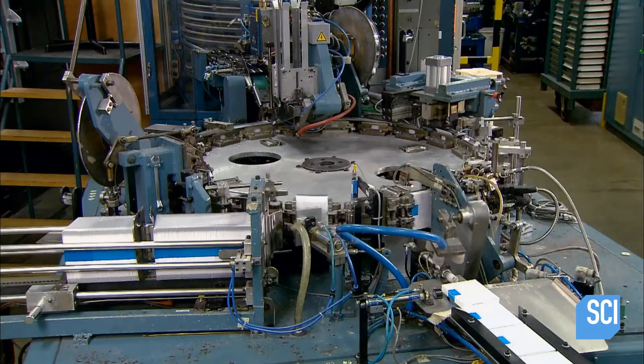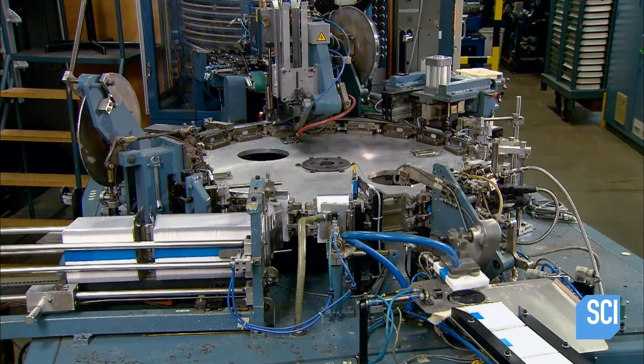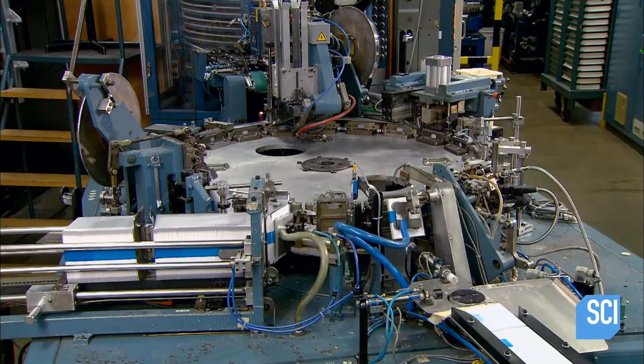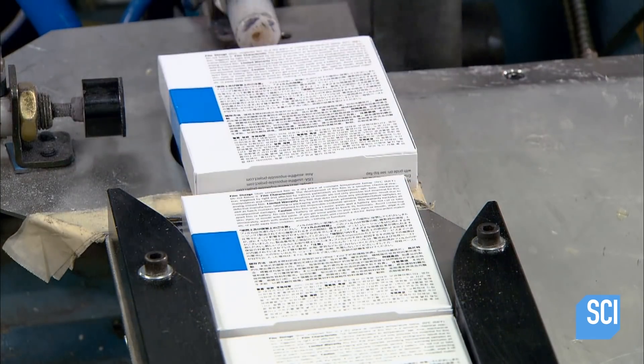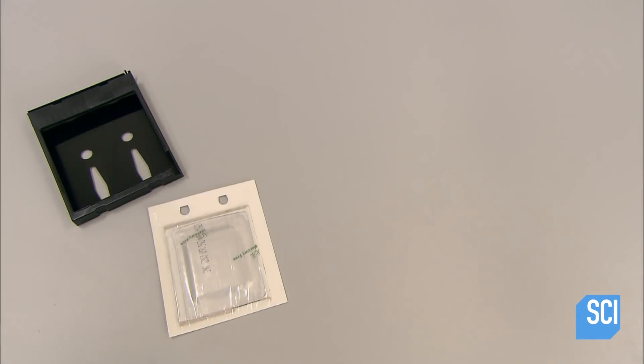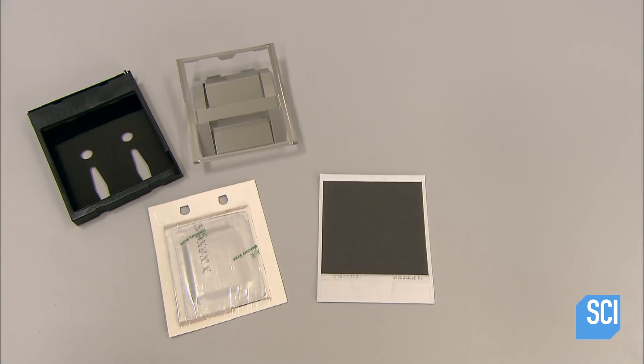Once folded closed, the box of instant film rides the carousel to a scale. A quick weighing confirms there's enough film in the box, so it's ready to ship. The assembly of this instant film pack has taken roughly three minutes.